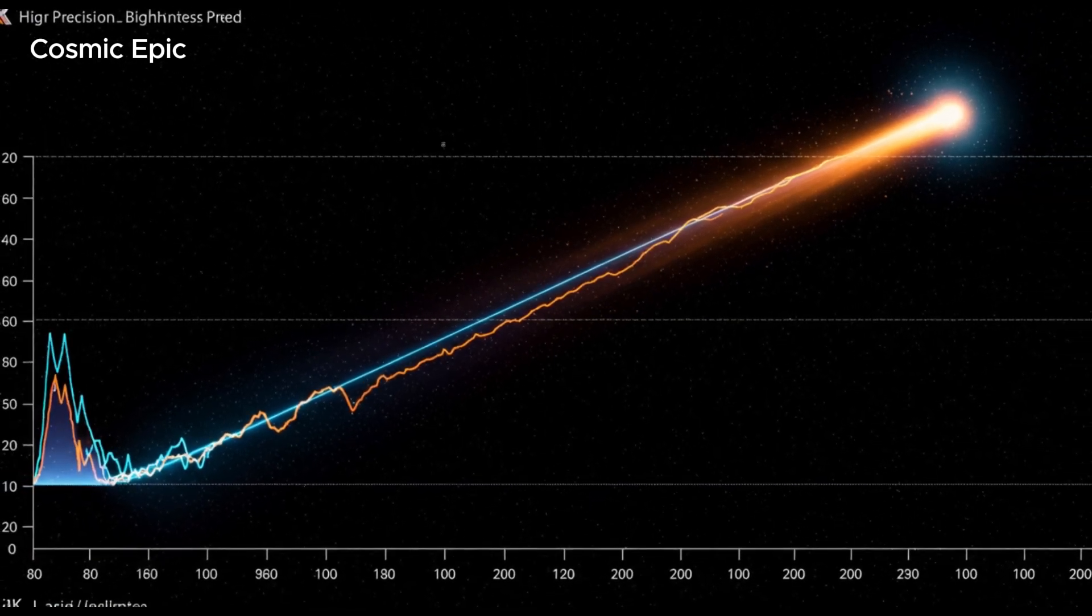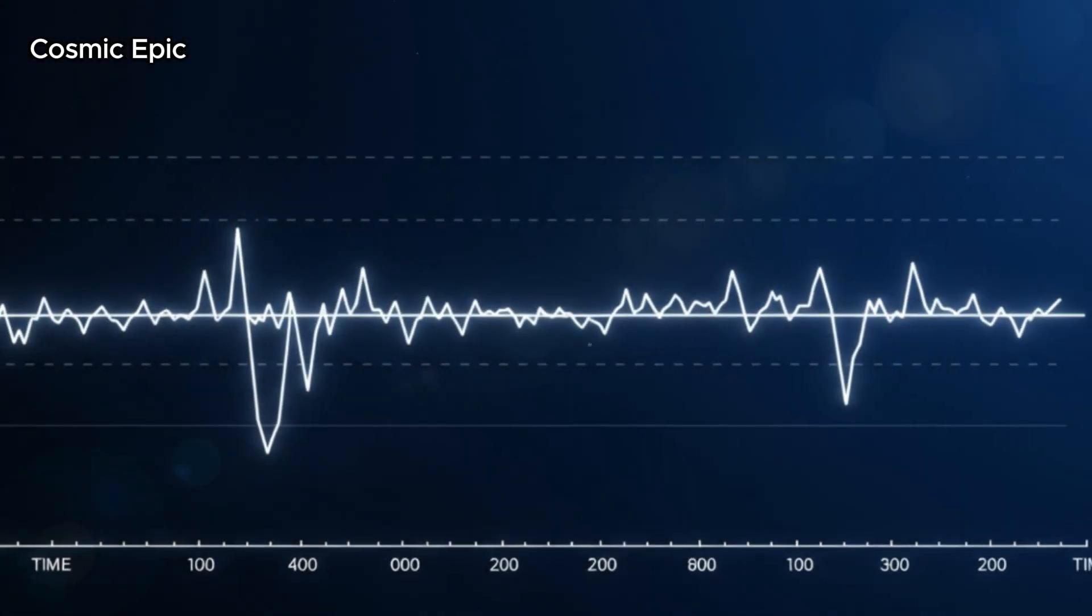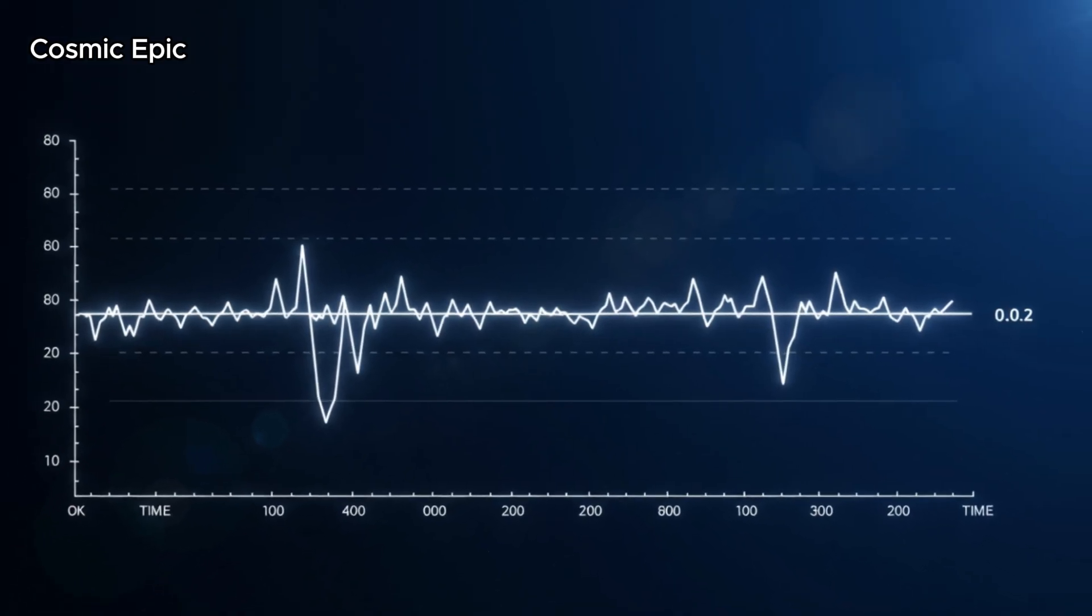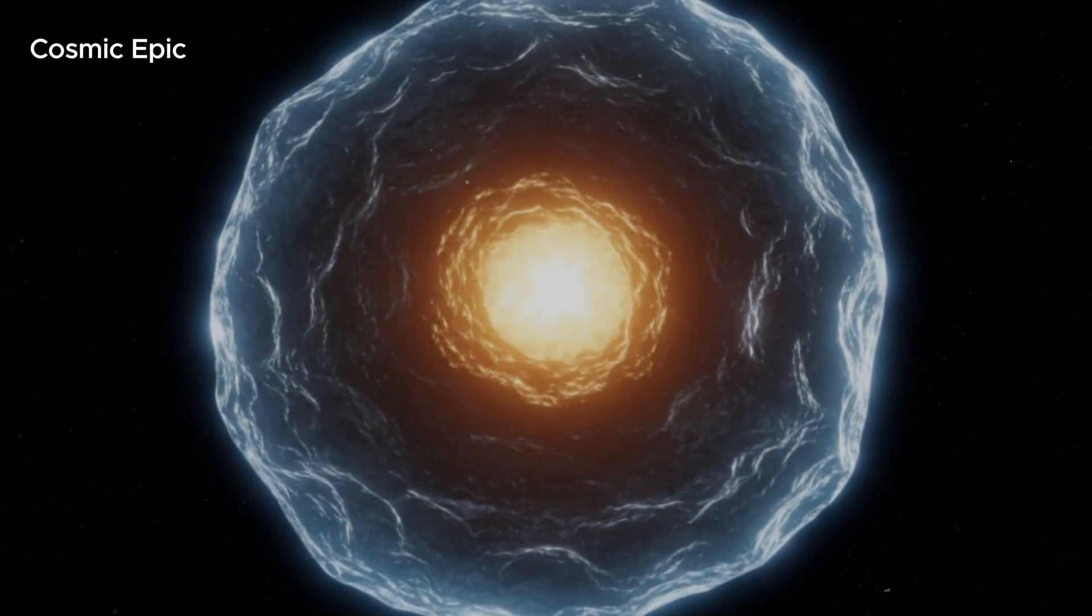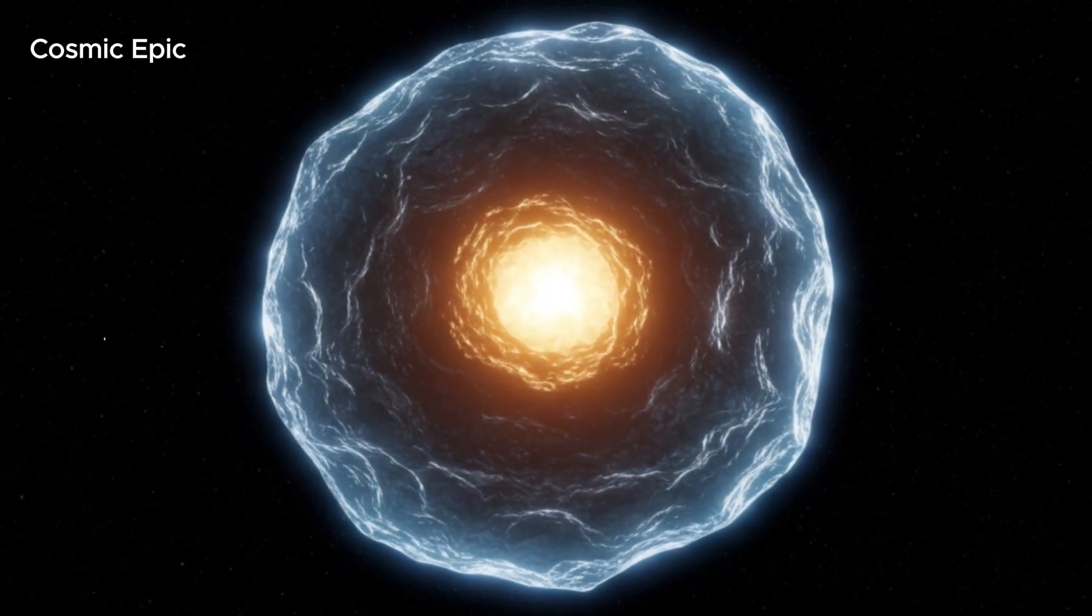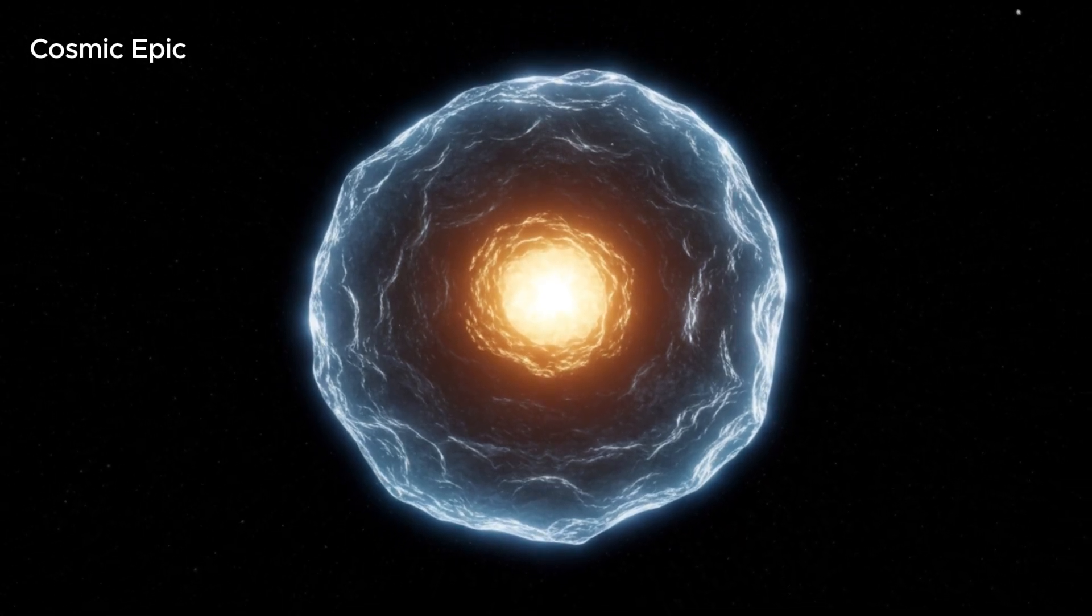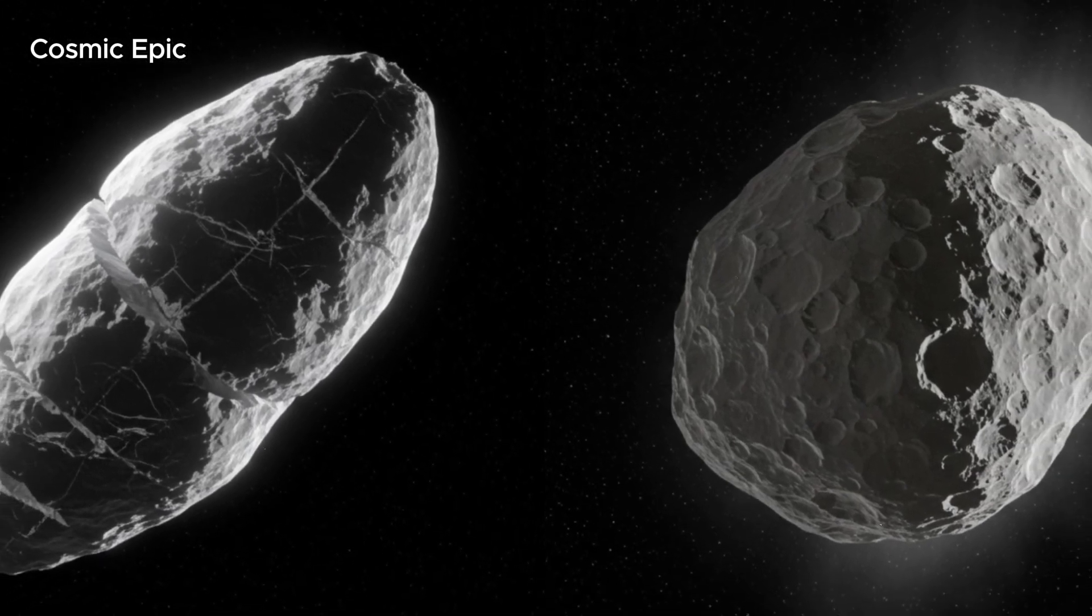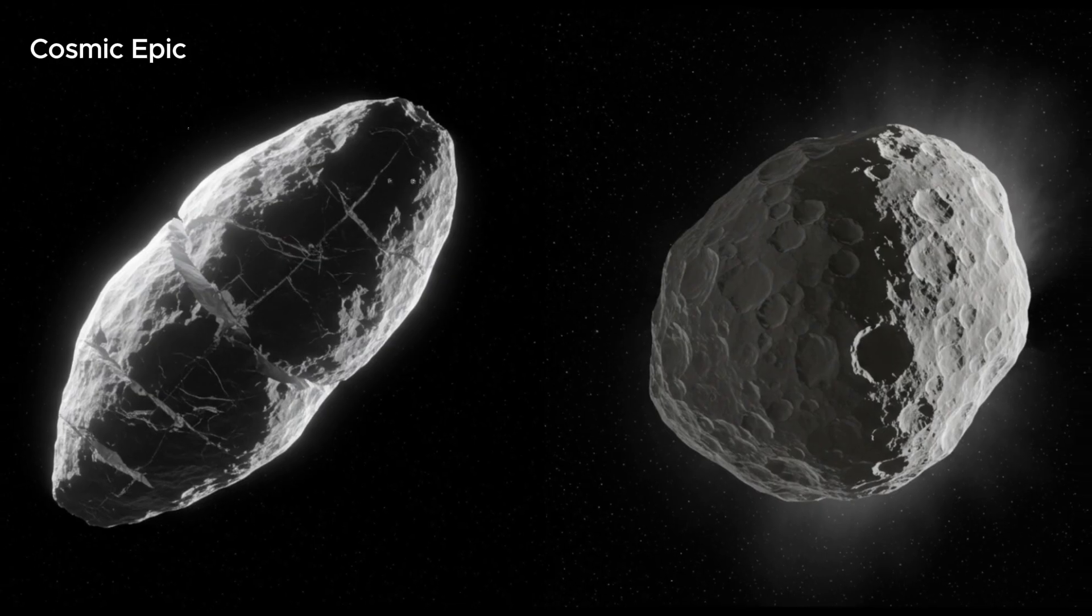After months of tracking, scientists began asking a bigger question: how many interstellar objects are really out there? The answer used to be simple: very few. But 3i/Atlas changed that. With only one such object found in years of constant observation, the estimated density of interstellar wanderers dropped sharply. Now scientists believe there may only be 0.001 per cubic astronomical unit. That's incredibly rare. It means most of space is empty.